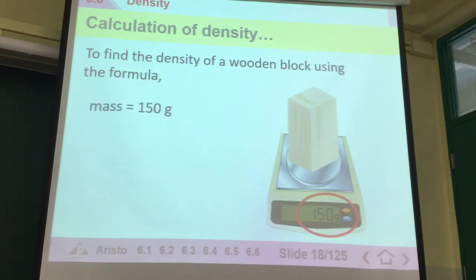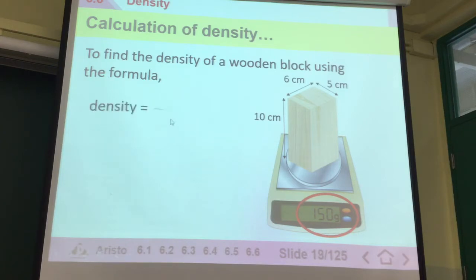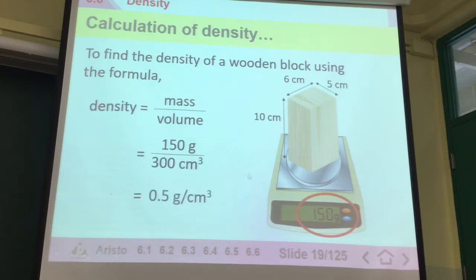Here's an example of calculating for a block of wood. We got 150 grams, and we got the volume of 300 cm³. What is the density? It's 150 divided by 300, which is 0.5 grams per cm³.